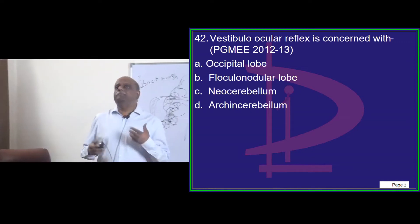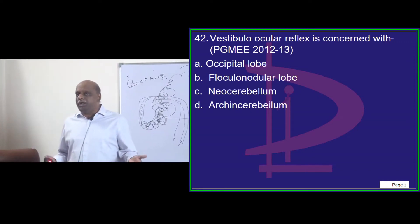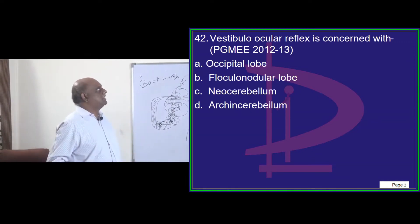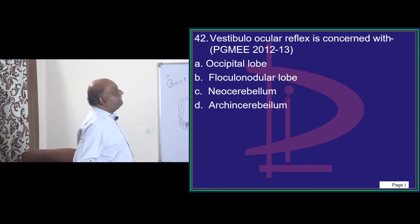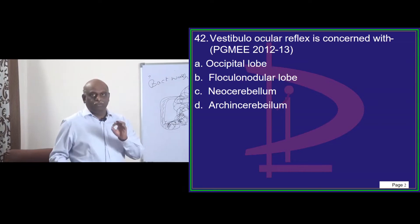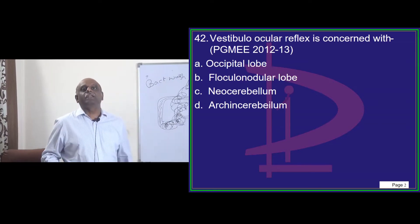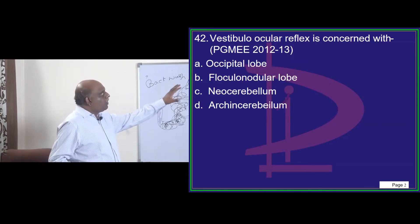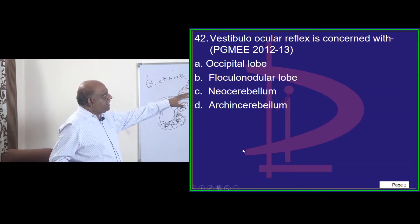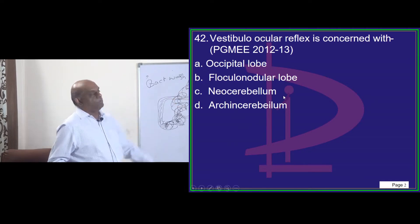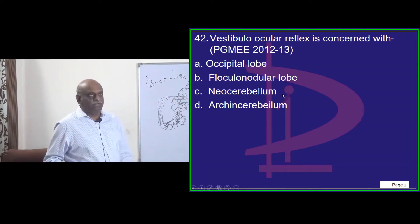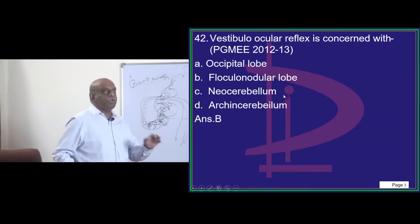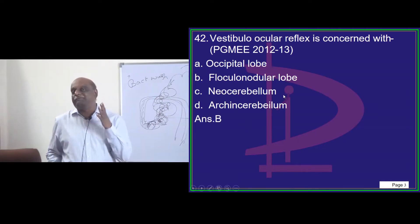The vestibulo-ocular reflex is concerned with which part of the cerebellum? It is the flocculo-nodular lobe which is important for the vestibulo-ocular reflex.